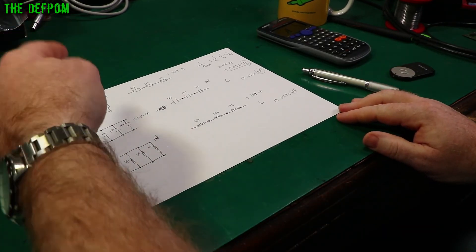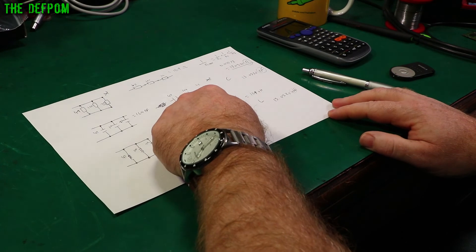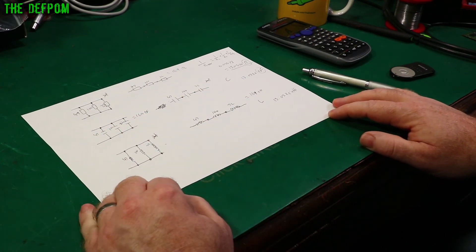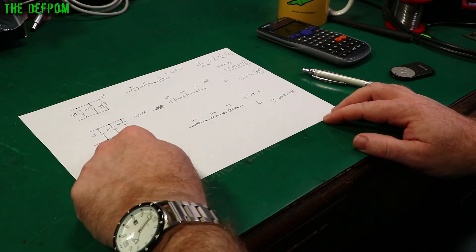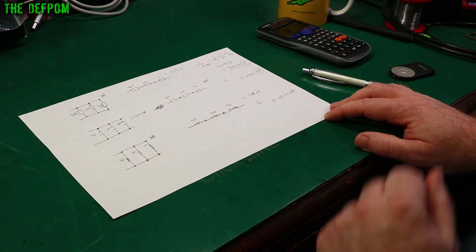So you remember parallel resistors, series capacitance, parallel inductors. Those are the things you have to calculate. Series resistance, parallel capacitors, series inductance. You can add them together.